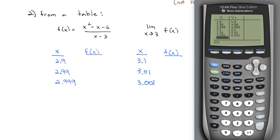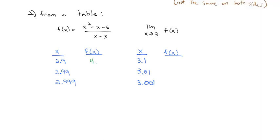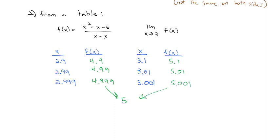What we see is the y-values are going in the same direction. The y-values on the left were 4.9, 4.99, and 4.999 — getting closer and closer to 5. The right side was doing the same coming in from the other direction: 5.1, 5.01, and 5.001 — also getting closer and closer to 5. Because it's approaching the same thing on both sides, we can say the limit as x approaches 3 is equal to 5.